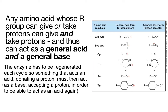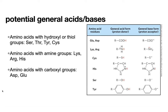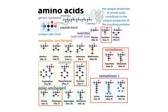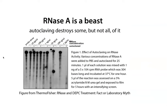General acids and bases are found in many different amino acids — not just the acidic or basic ones, but also those with hydroxyl groups: tyrosine, serine, threonine; and those with thiol groups: cysteine. When we talk about acidic amino acids like aspartate and glutamate, or basic ones like lysine, arginine, and histidine, the acidic/basic classification only refers to how they act in their neutral form, but they're able to act as both general acids and general bases.